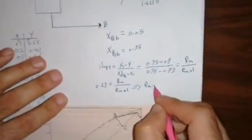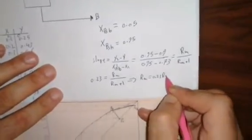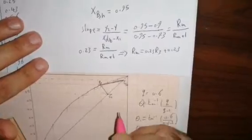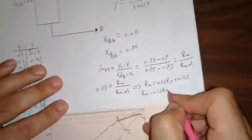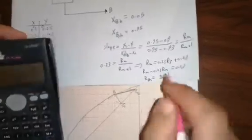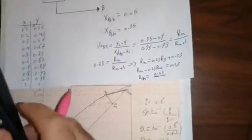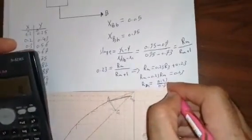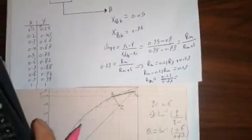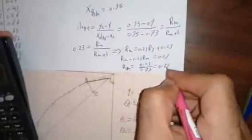So just one equation, because this slope will be equal RM divided by RM plus 1. So we can calculate this. RM equal 0.23 RM plus 0.23. That is mean RM minus 0.23 RM equal 0.23, so 0.77 RM equal 0.23. RM will be equal 0.23 divided by 0.77, RM equal 0.29.